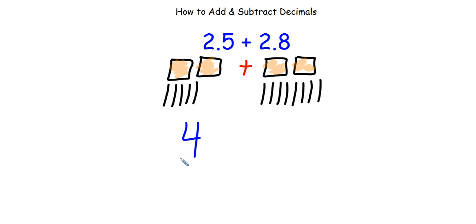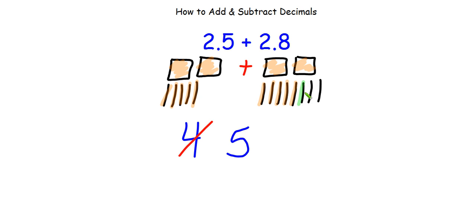I'm going to go ahead and count. I have 1, 2, 3, 4, 5, 6, 7, 8, 9, 10. I'm going to stop here because I realize I have one whole with all these 10 tenths. So I'm going to switch this 4 to a 5 — now I have 5 wholes. Continuing to count the rest of the tenths, I have 1, 2, 3 more. So now I can write my answer as 5 and 3 tenths.